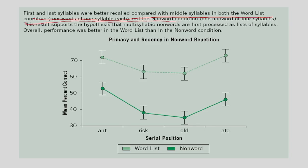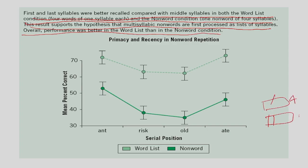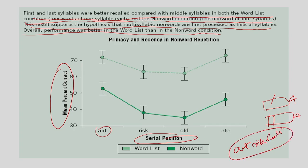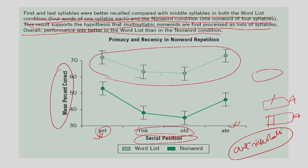A study compared four words of one syllable each (word list condition) versus one non-word of four syllables. Results showed that primacy and recency effects occur in both conditions — first and last syllables were better recalled compared to middle syllables. This supports the hypothesis that multi-syllable words are first processed as a list of syllables. Overall performance was better in the word list condition than in the non-word condition.